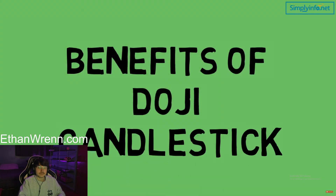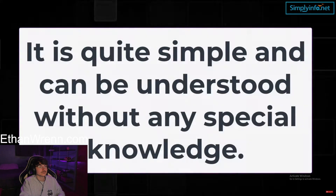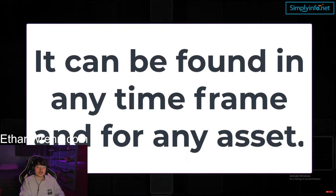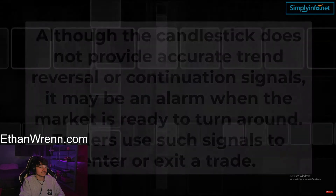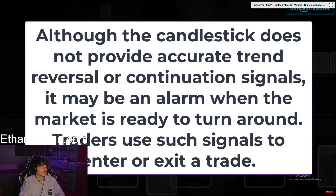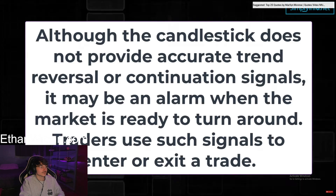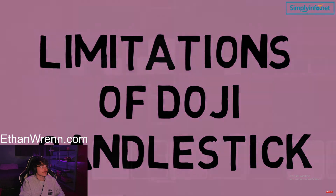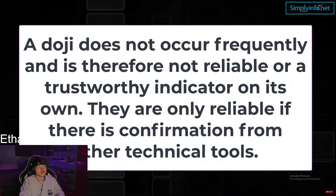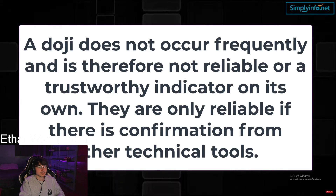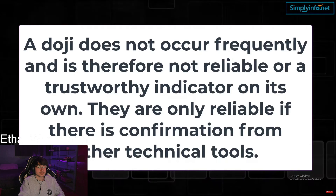The benefits of doji candlesticks: they are quite simple and can be understood without any special knowledge, and can be found in any time frame for any asset. Although the candlestick does not provide accurate trend reversal or continuation signals, it may serve as an alarm when the market is ready to turn around, and traders use such signals to enter or exit a trade. As for limitations, a doji does not occur frequently and is therefore not a reliable indicator on its own — they are only reliable with confirmation from other technical tools.